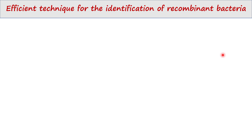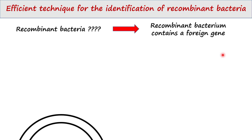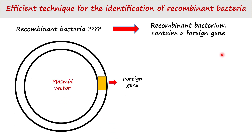So what does recombinant bacterium mean? A recombinant bacterium is a bacterium which contains an extra gene or a foreign DNA fragment. So how does a bacteria become recombinant? First, we insert a gene of interest into the vector.